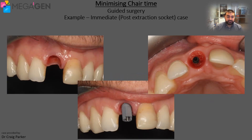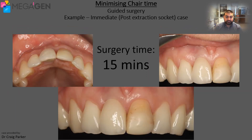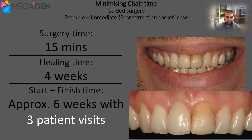These images were taken four weeks after surgery and we can see that the gum looks healthy and the dentist was happy to proceed to the next stage. He placed a scan body into the implant and intraorally scanned the case in preparation for the definitive crown. Here are the final results of the definitive crown in place, which was delivered two weeks after the scanning. The patient was extremely happy with the aesthetics. In total we had a surgery time of 15 minutes, a healing time of four weeks, and a start to finish time of approximately six weeks with three patient visits — compared to the 20 weeks and four patient visits for the freehand case.